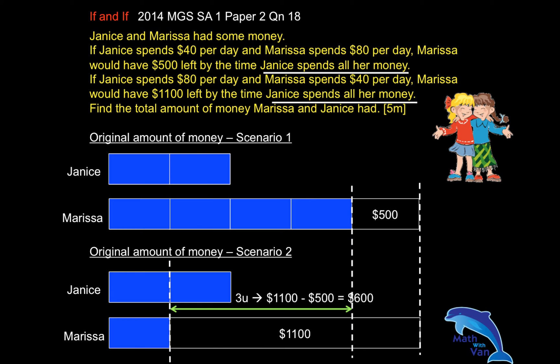So it's $1,100 plus $600. We don't even have to solve what one unit is, because this is the original amount of money: three units plus $1,100. As I always advocate, understand with the pictorial model first, and then move on to the abstract representation of just using units.